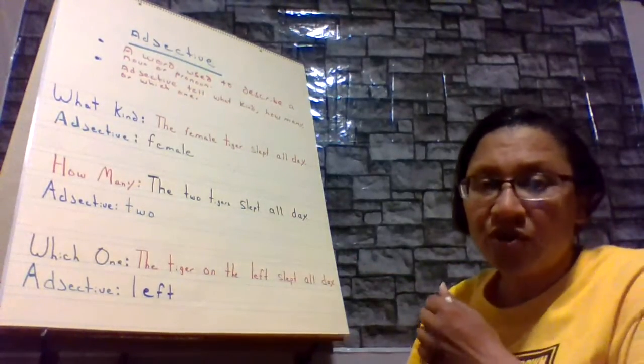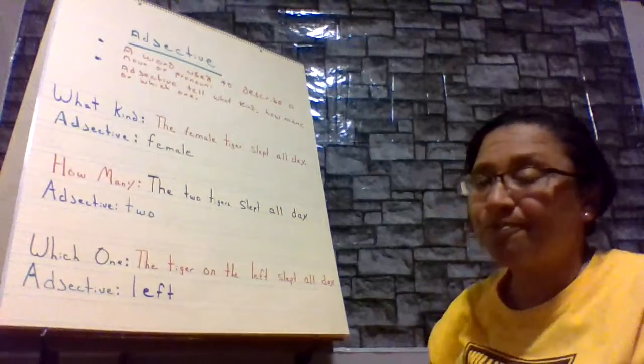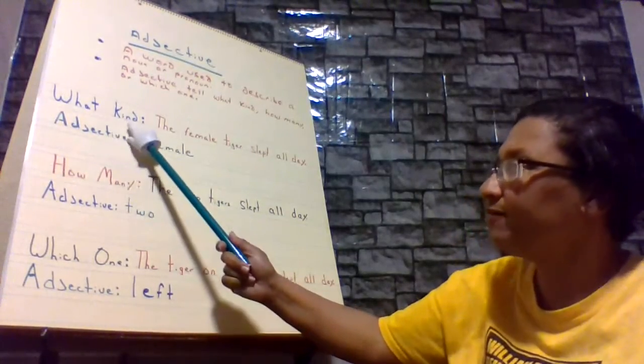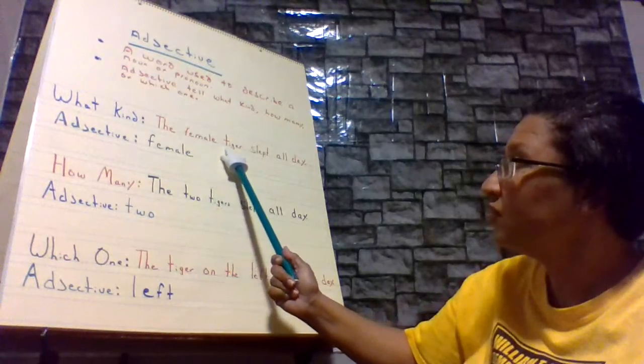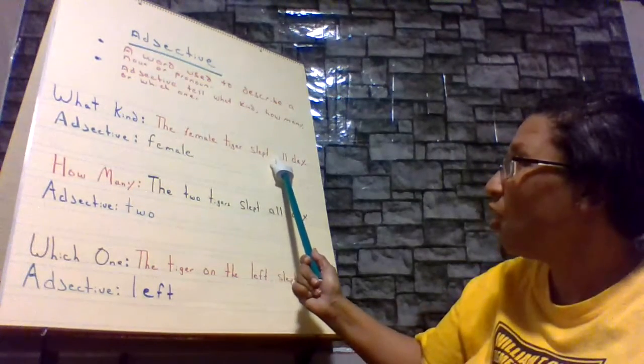Now, let's go over several examples of what I'm talking about. What kind? The sentence says, the female tiger slept all day.